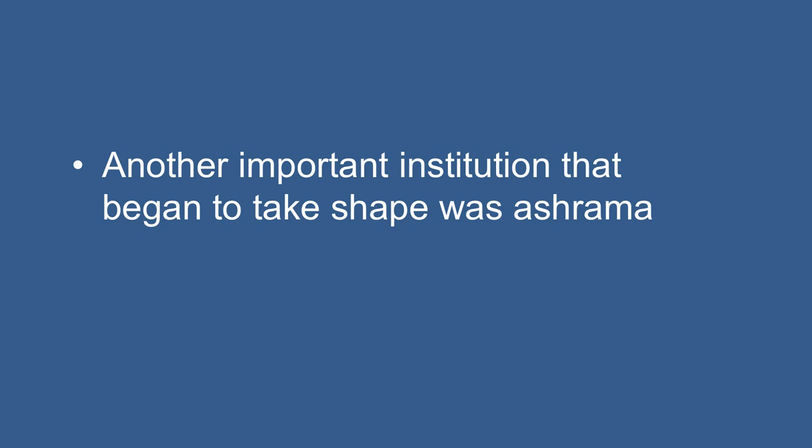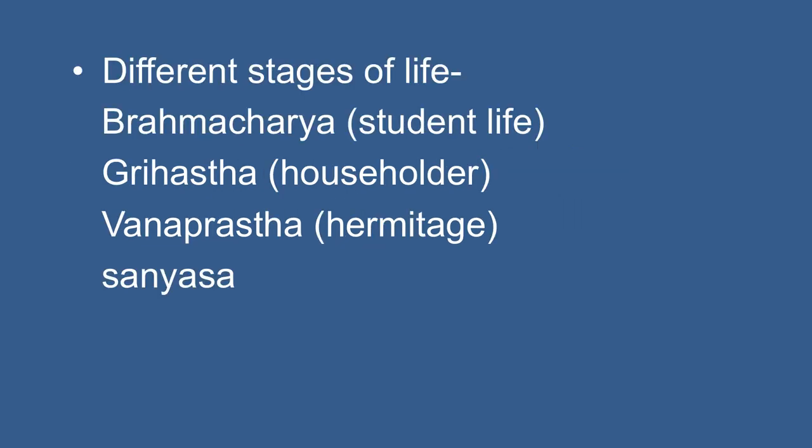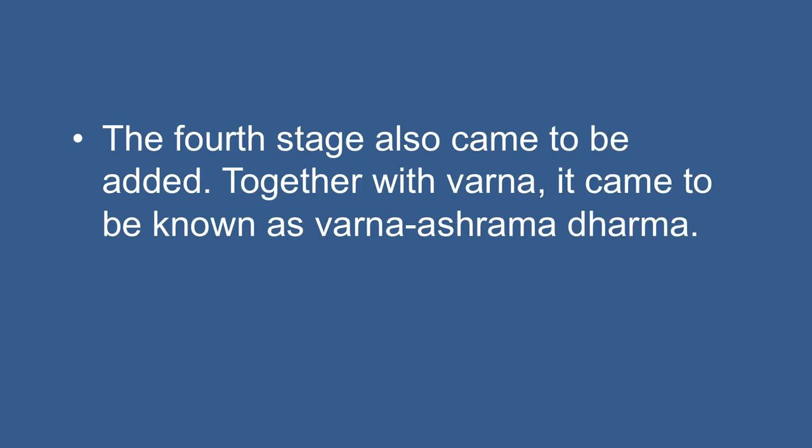Another important institution that began to take shape was the Ashrama system — different stages of life. Brahmacharya (student life), Grihastha (householder), and Vanaprastha stages are mentioned in the texts. Later, Sanyasa — the fourth stage — was also added. Together with Varna, it came to be known as the Varnashrama Dharma.